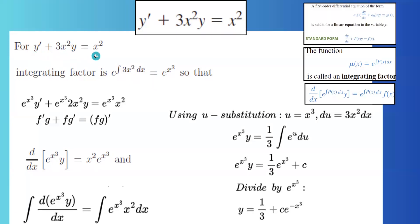Now multiply every term by e to the x cubed, which is e to the x cubed y prime plus e to the x cubed times 3x squared y equals to e to the x cubed x squared.